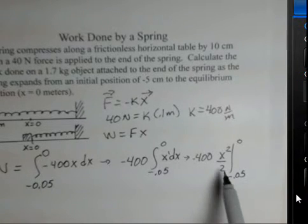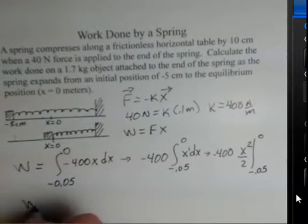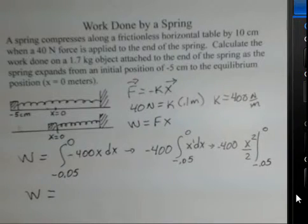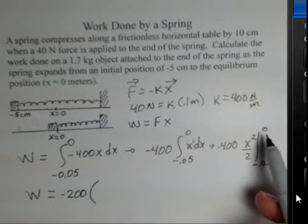So let's come down here and evaluate this. I could distribute the 2 into the 400, divide that out, and the work then is minus 200.